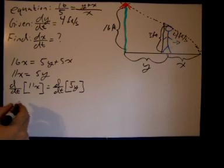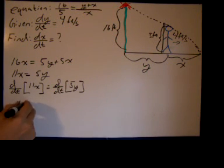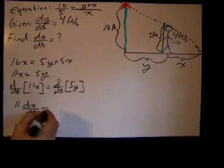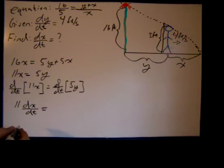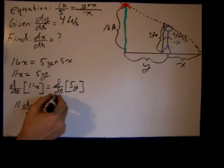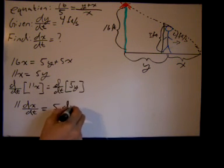The derivative with respect to t of 11X, the derivative of 11X is just 11, the derivative with respect to t is just dx/dt, and we're deriving implicitly. The derivative of 5Y is just 5 times dy/dt.